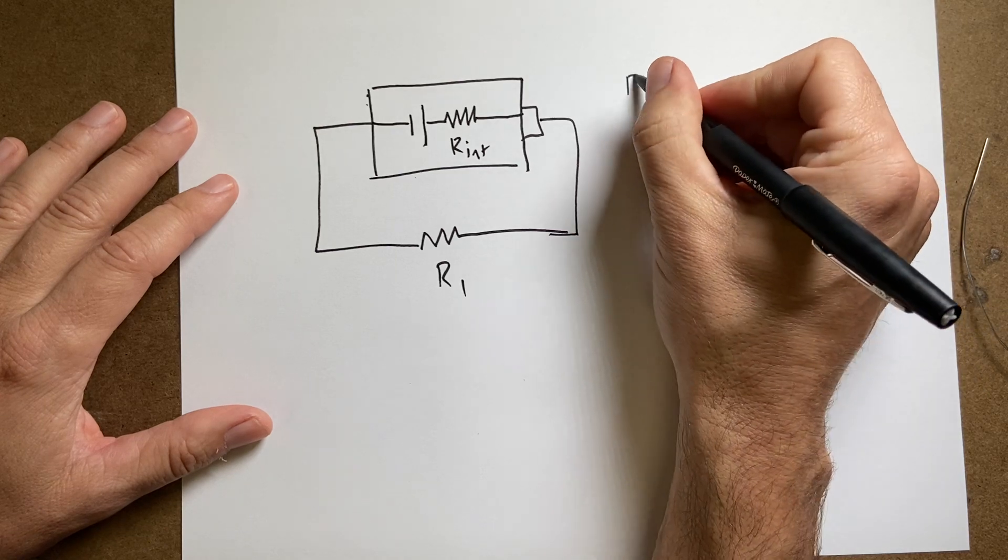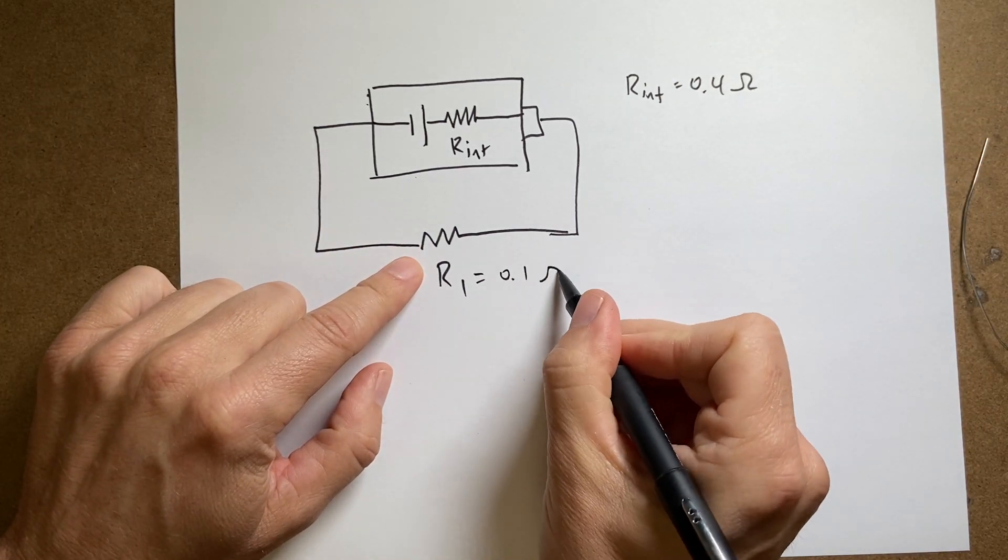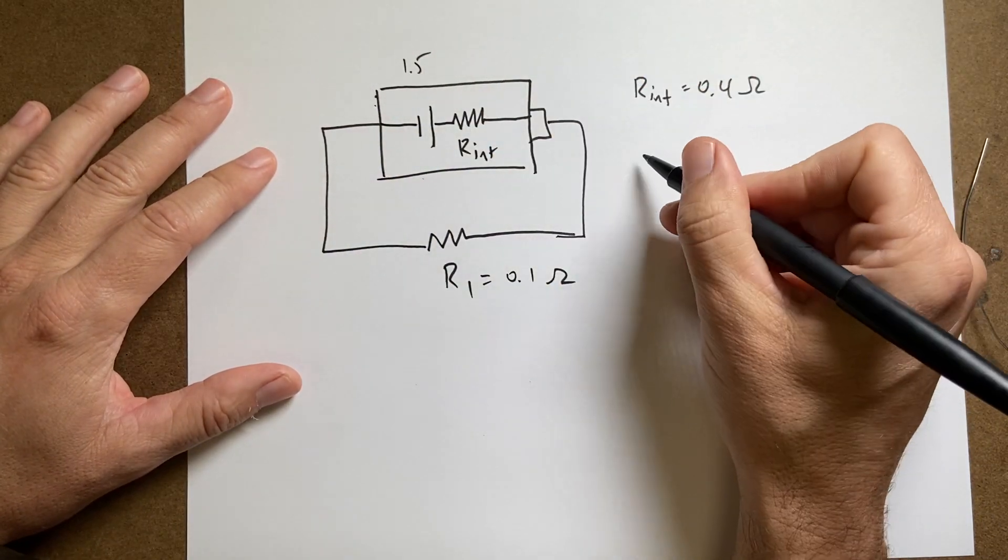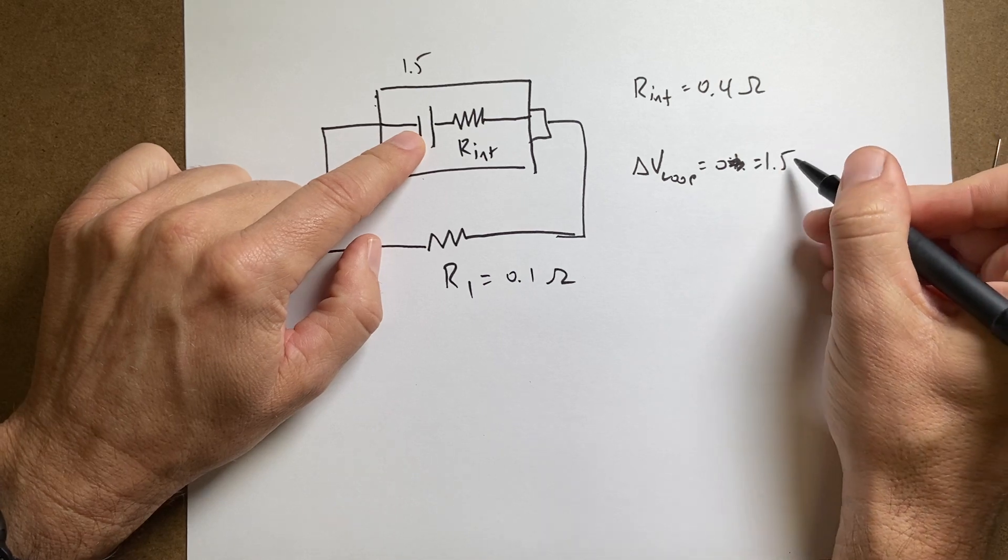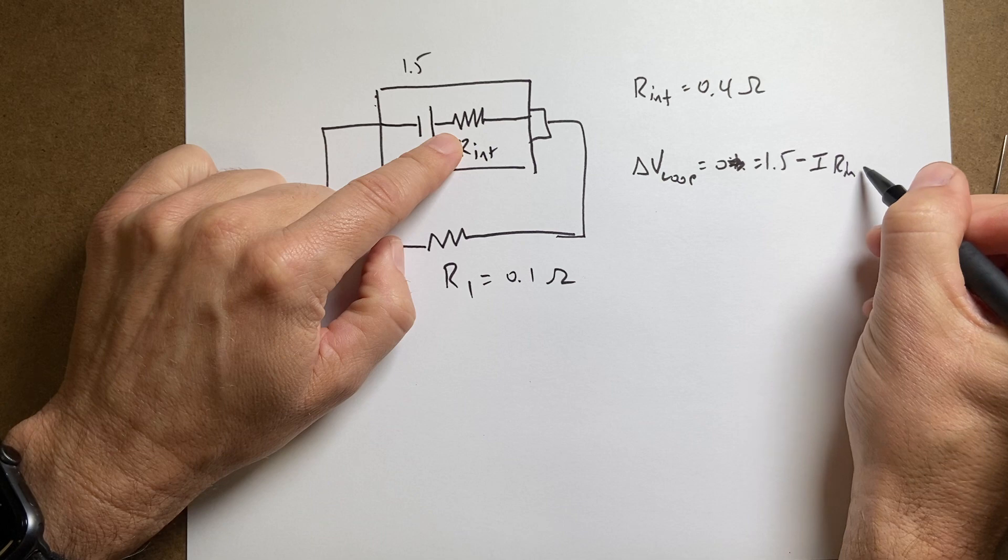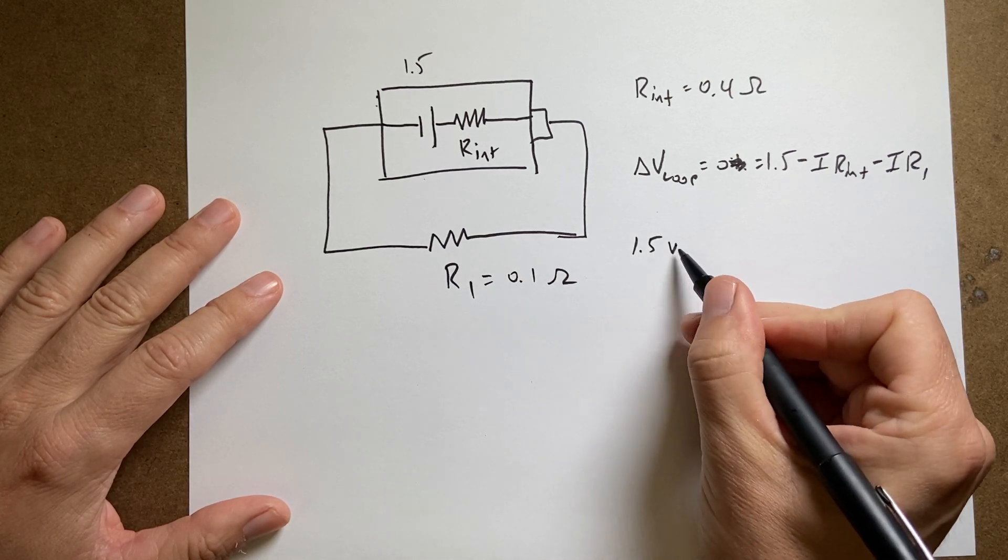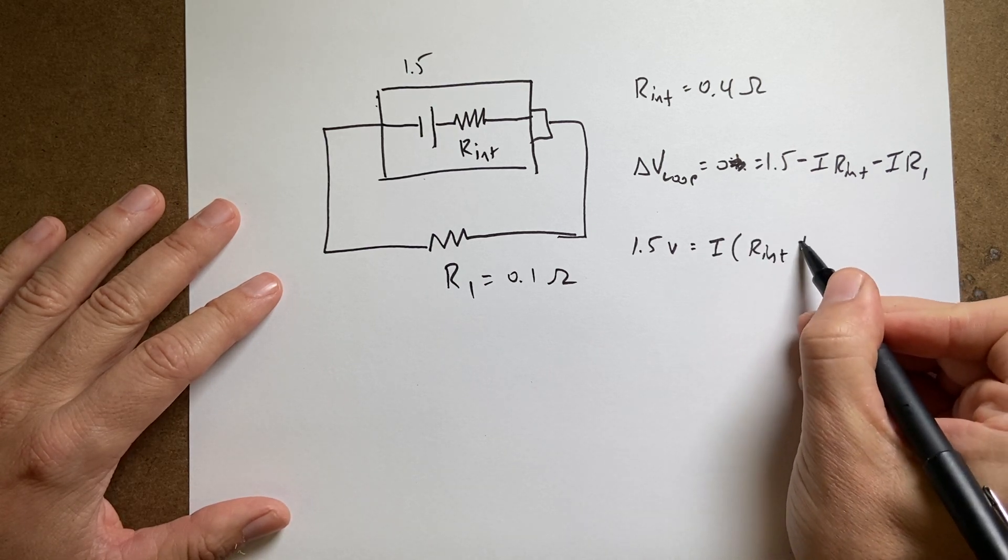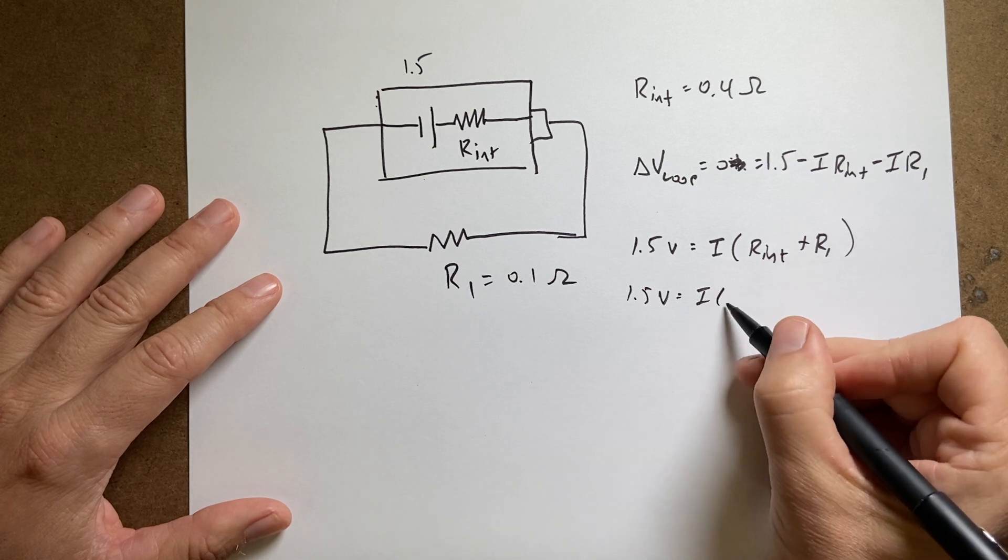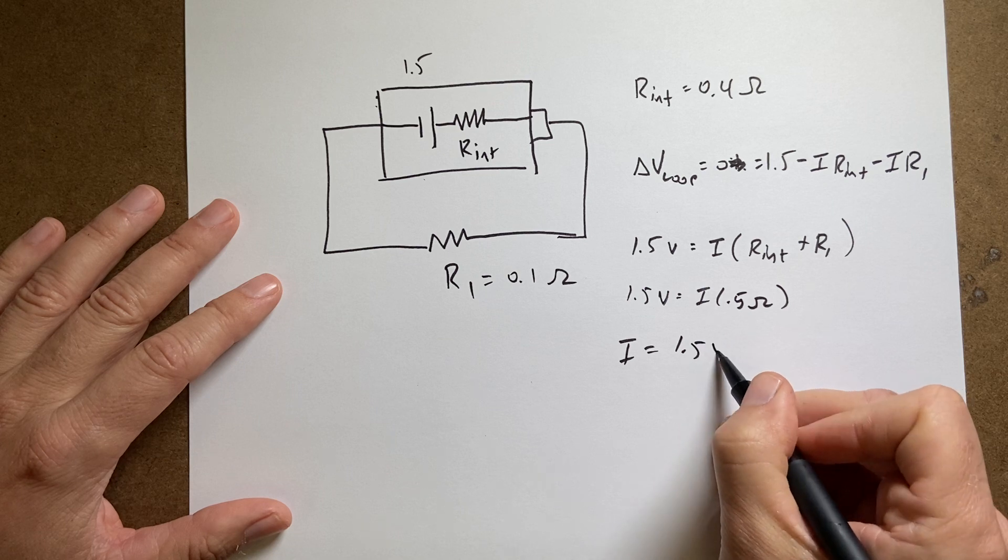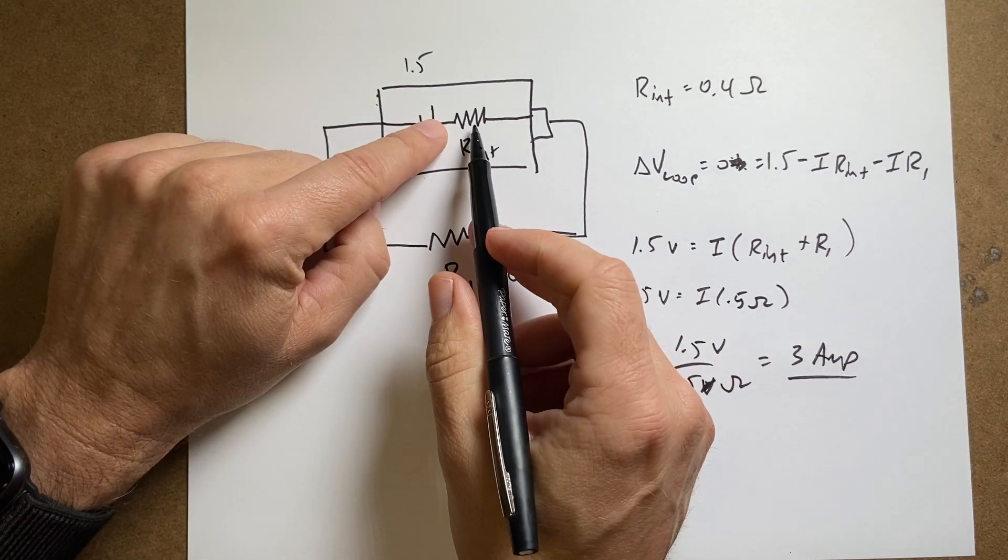So that R internal, let's see how that would work. Let's say R internal for this is equal to 0.4 ohm. So if I hook this up to a 0.1 ohm resistor, then this is still 1.5 volts. Now if I do the loop rule, delta V loop equals 0, I get 1.5 minus I R internal minus I R1. So this is the same as saying 1.5 volts equals I times R internal plus R1. And so this is going to be 1.5 volts equals I. If I add these two together, I get 0.5 ohms. So I would be 1.5 volts over 0.5 ohms. And this would give me 3 amps. Not 15.